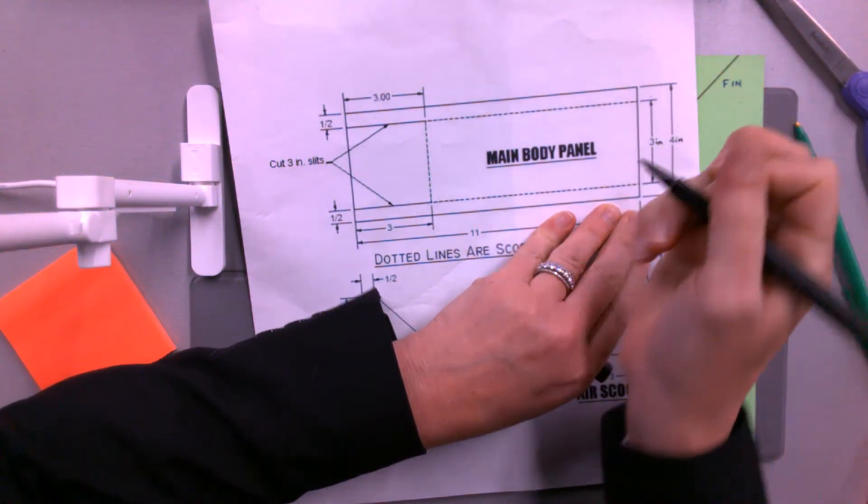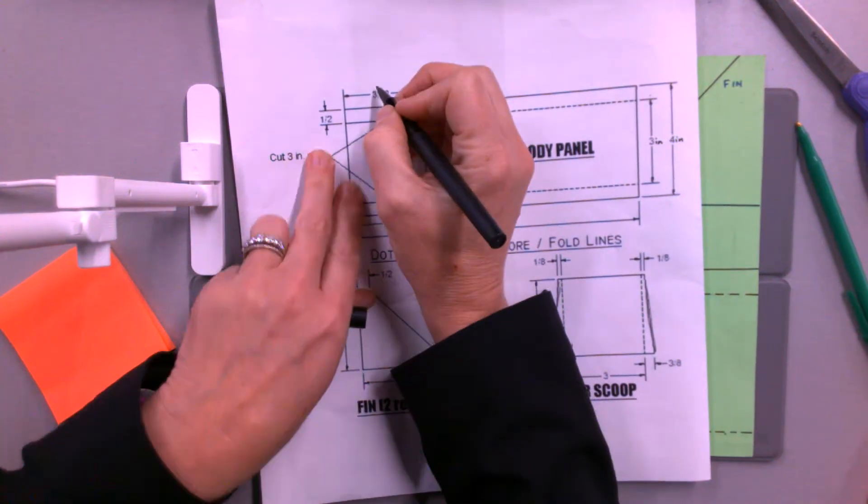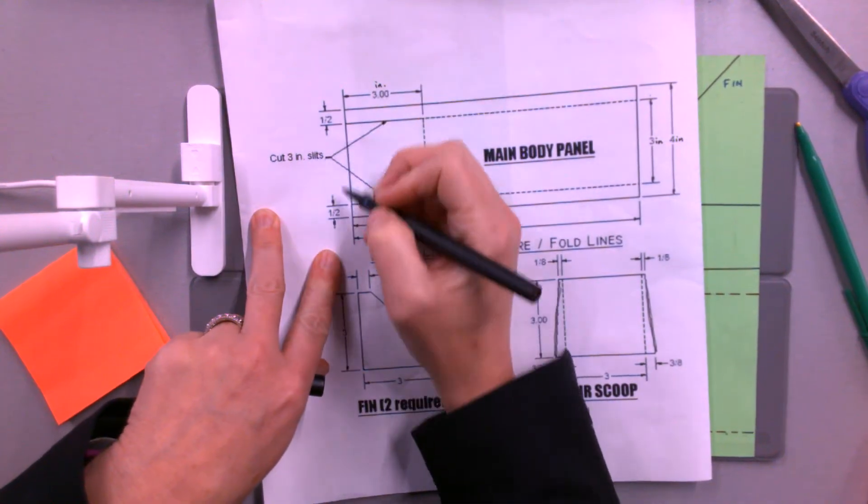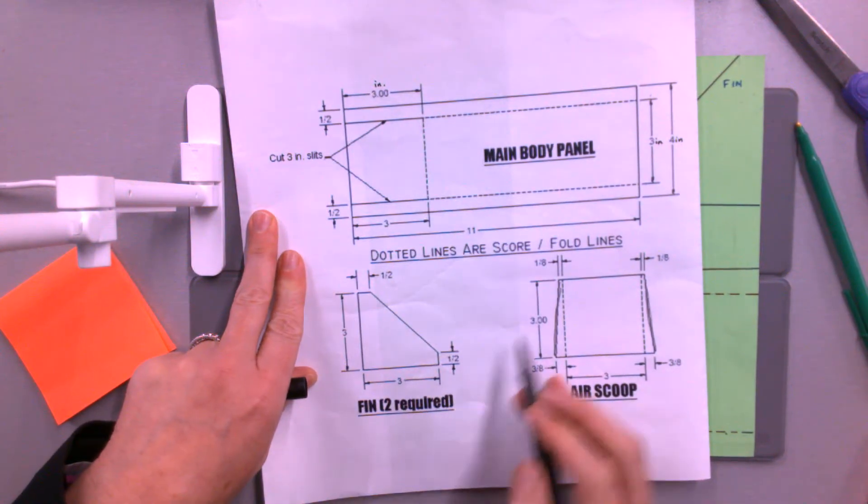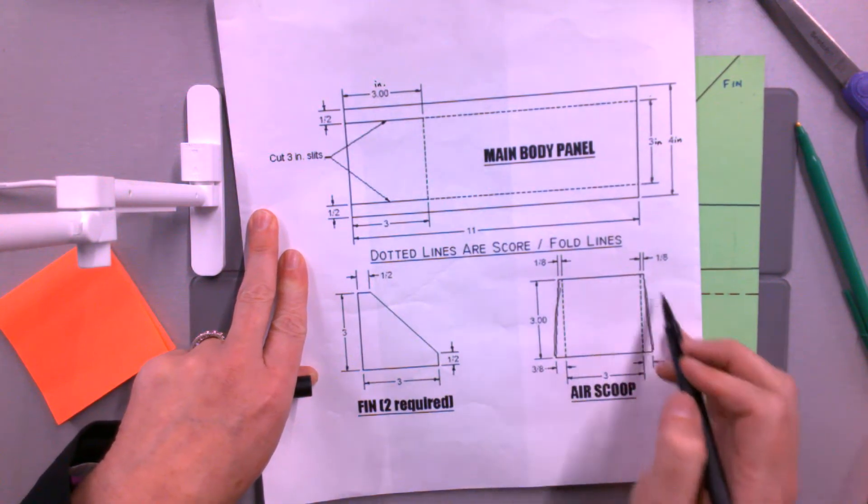This should be four inches wide, then three inches, three inches from here. This is one inch, this is a half inch, half inch, then three inches to this dotted line here. The dimensions are all right here on this plan.